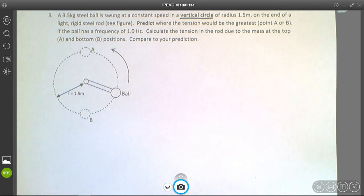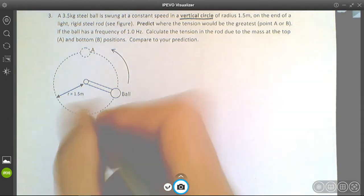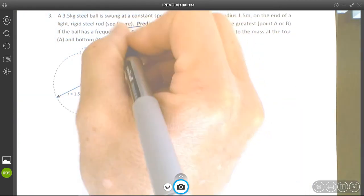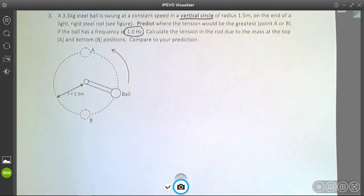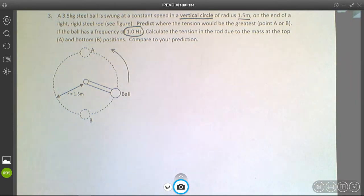We are going to consider a situation where there's a mass attached to a rod, rotating at a constant rate of one hertz (one cycle per second). The radius is 1.5 meters and the mass of the ball is 3.5 kilograms.